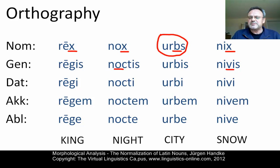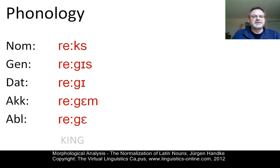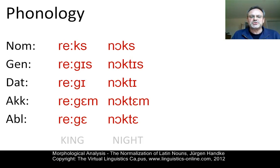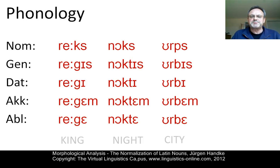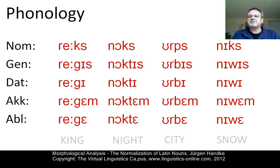What we need is a phonetic representation in terms of phonemes. Here it is: rex, regis, regi, regem, rege. Then we have nox, noctis, nocti, noctem and nocte. The third paradigm is urps, urbis, urbi, urbem, urbe. And finally we have nix, niwis, niwi, niwem, niwe.